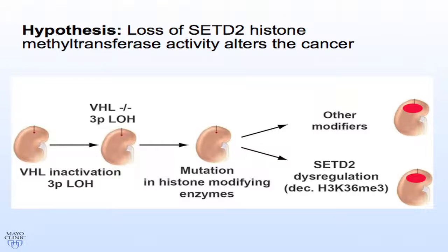My hypothesis for this project is that the loss of SETD2 histone methyltransferase activity alters the cancer phenotype. VHL inactivation and 3p loss of heterozygosity are among the earlier events, followed by mutations in histone-modifying enzymes. I was particularly interested in the subset of patients with SETD2 dysregulation evidenced by decreased histone 3-lysine 36 trimethylation — predicting that loss of enzyme function yields decreased histone modifications.